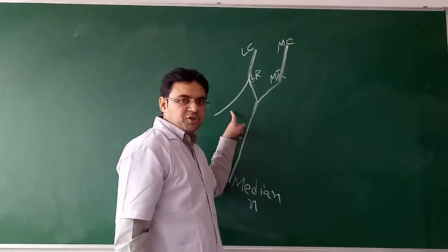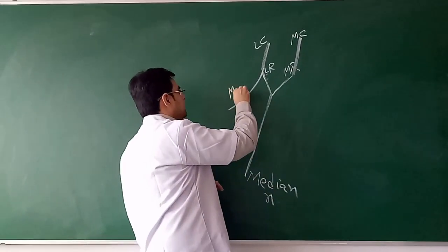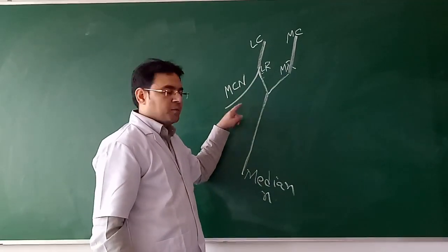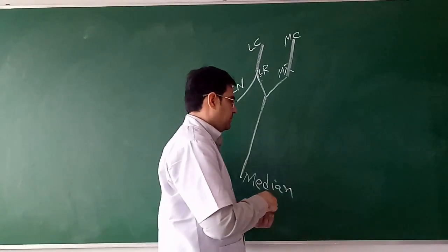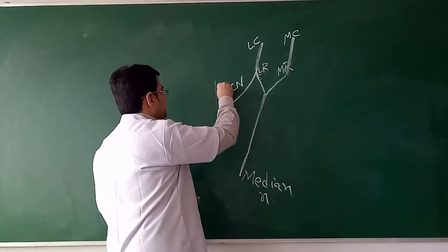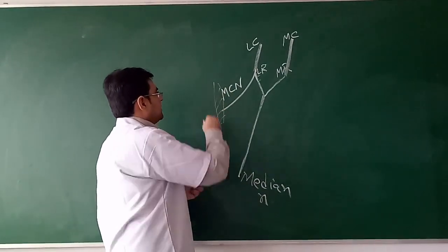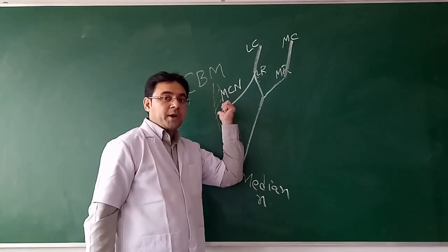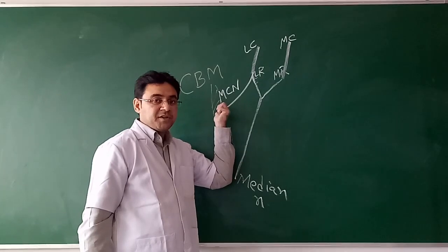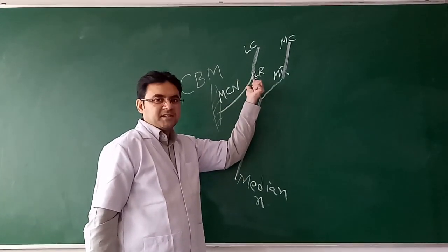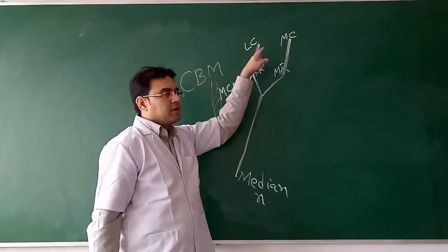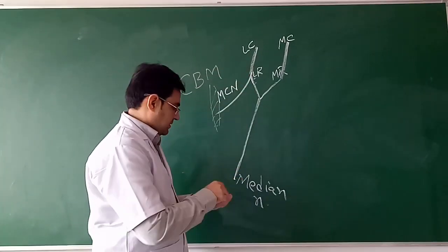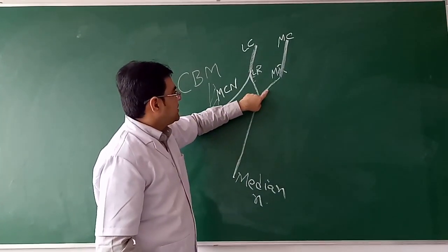You can see another branch coming from the lateral cord, and that is the musculocutaneous nerve. The musculocutaneous nerve pierces a muscle — this muscle is the coracobrachialis muscle. The coracobrachialis muscle is pierced by the musculocutaneous nerve, which is coming from the lateral cord of the brachial plexus.